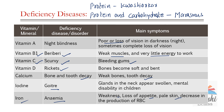Iodine deficiency causes goiter — main symptoms are swollen glands in the neck and mental disability in children. Iron deficiency causes anemia — symptoms are weakness, loss of appetite, pale skin, and decrease in the production of red blood cells. Sodium deficiency causes nausea and irritability. Sodium is important in controlling blood pressure, and the source of sodium is table salt. These are the deficiency diseases caused by the deficiency of different nutrients.